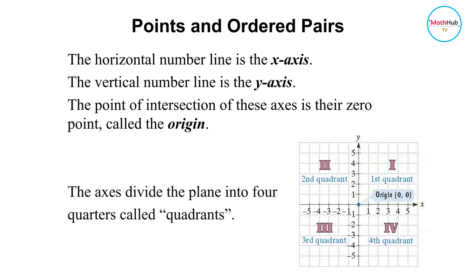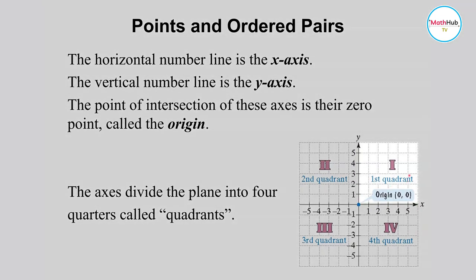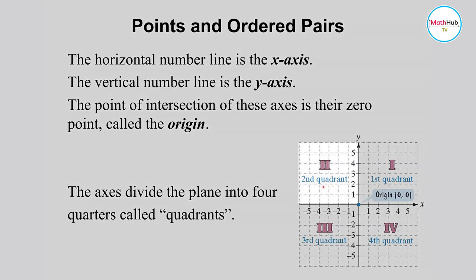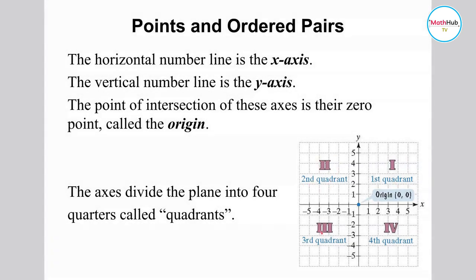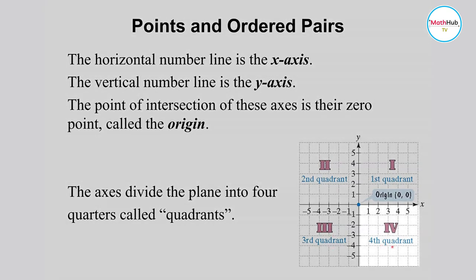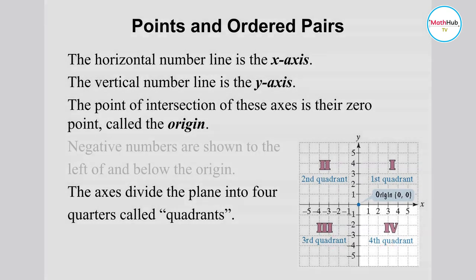The axes divide the plane into four quarters called quadrants. This is quadrant one or the first quadrant, this is the second quadrant or quadrant two, and quadrant three or the third quadrant, and this is the fourth quadrant.